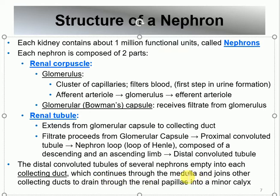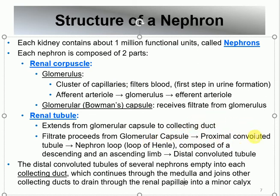From the collecting duct, the fluid passes through the medulla to the renal papilla (tip of the pyramids), and then to the minor calyx. What reaches the minor calyx is now called urine. So: the filtrate leaves the glomerulus, enters Bowman's capsule, travels through the tubules where good stuff is reabsorbed and bad stuff is secreted, and whatever leaves the collecting duct at the papilla tip into the minor calyx — that is urine. From the minor calyx onward, it remains urine until it exits the body.